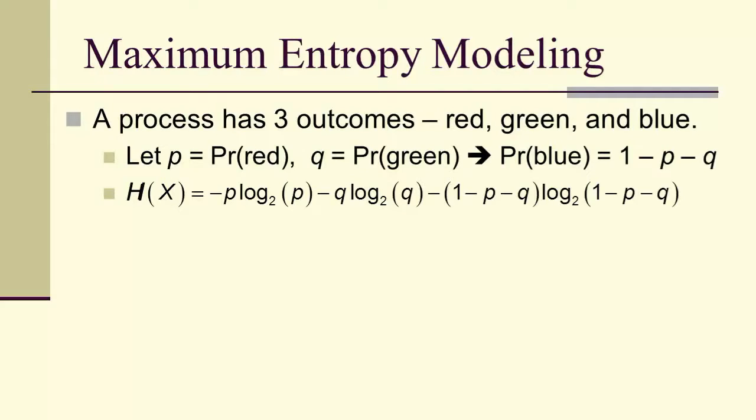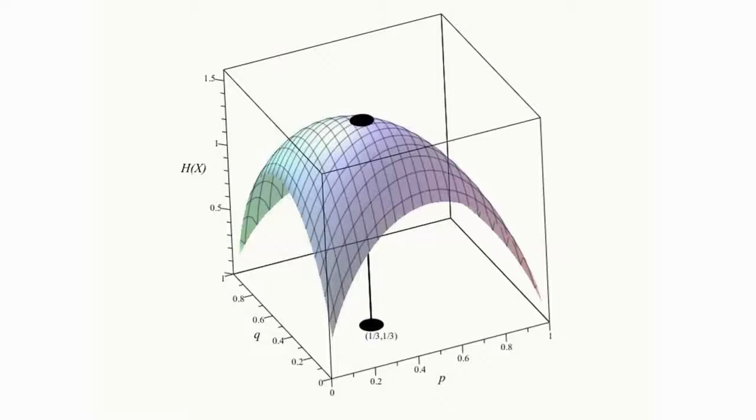And that gives us an entropy of -p log_2(p) - q log_2(q) - (1-p-q) log_2(1-p-q). And here we can actually see the surface that corresponds to that entropy.